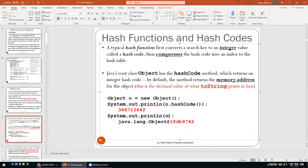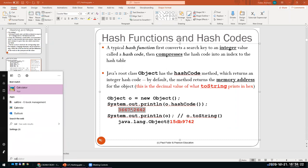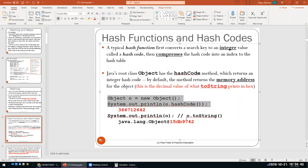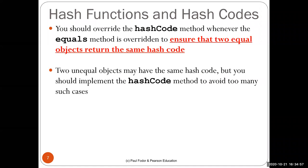If you take the integer returned by hashCode() and convert it to hexadecimal, you get exactly the value printed by the default toString() method. For example, the integer 365887298 converts to 15db9742 in hexadecimal — the address of that object in memory. When you implement a new class, you should override hashCode() with your own implementation.